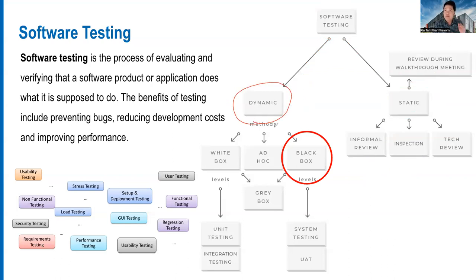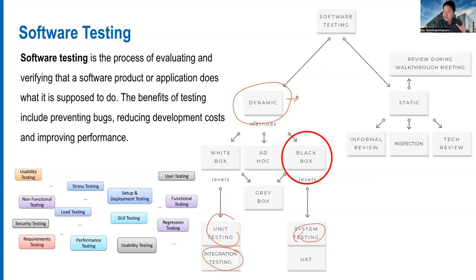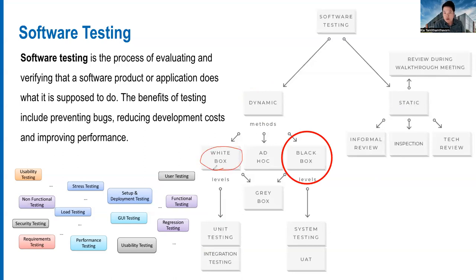When we talk about dynamic software testing, we actually execute the code. There are different types of dynamic testing techniques. This is what we did in Week 3 — we wrote unit tests, wrote test cases, and executed them. This can check functionality correctness of each method, integration testing, and whether the whole system works.